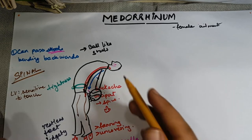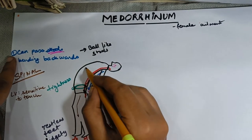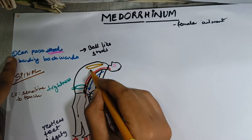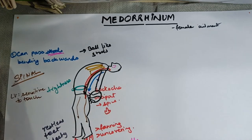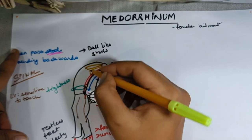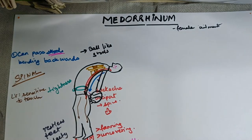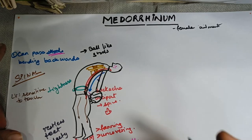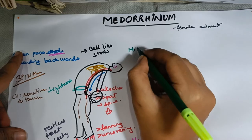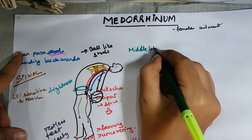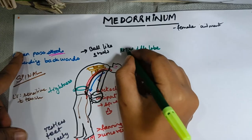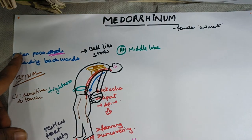Moving on to the lung symptoms. Since the person is bent backwards, the lungs would be positioned accordingly. The important thing about lungs in Medorinam is that the middle lobes are affected. To be even more specific, it is the middle lobe of the right lung.